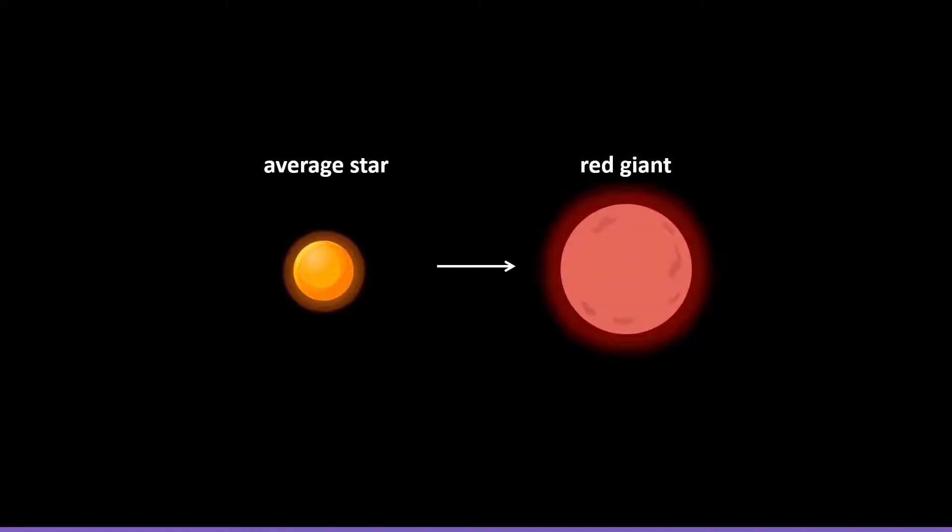But stars don't live forever. After a few billion years, the hydrogen in the stars runs out. A star then grows in size and becomes a red giant.